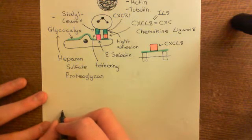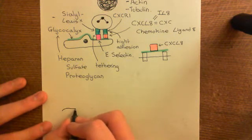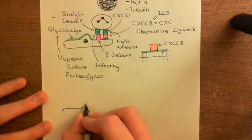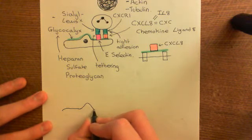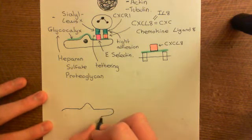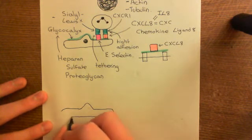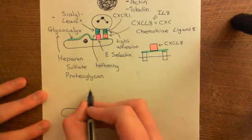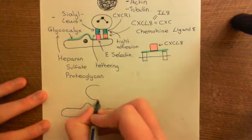They're going to stop producing E-selectin and CXC chemokine ligand 8. And instead, they're going to start producing molecules, which are needed for a different type of cell recruitment, a different type of leukocyte to be recruited. Okay, and the type of leukocyte they're going to start recruiting from the blood are monocytes.